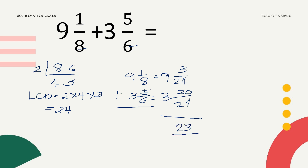Copy the denominator 24. Then 9 plus 3 equals 12. So the answer is 12 and 23 over 24.